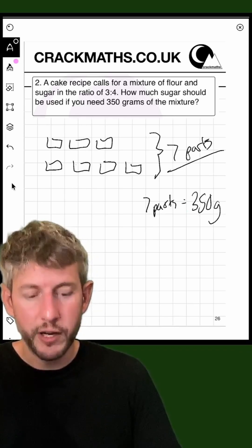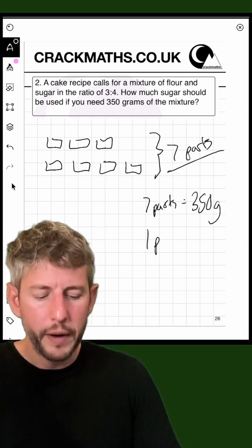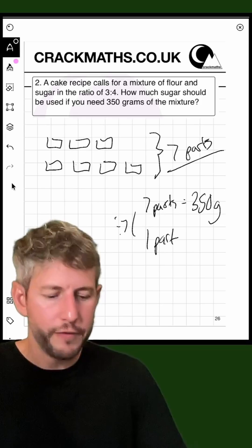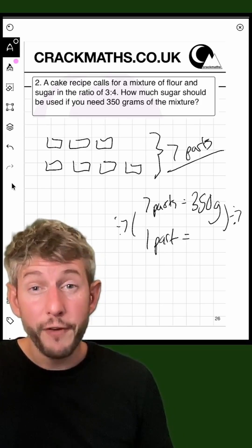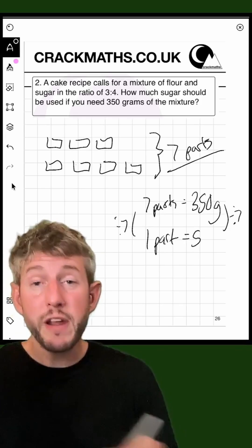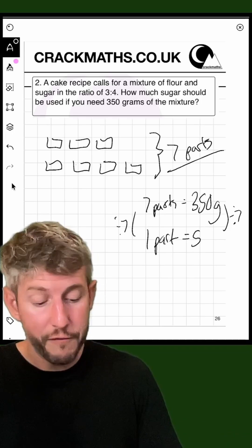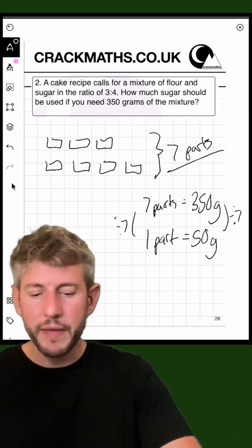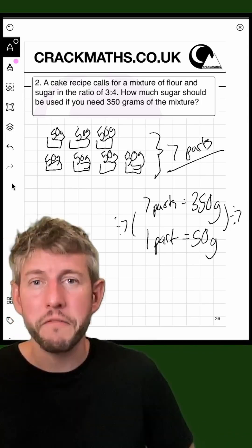If seven parts equal 350 grams, that means that one part is equal to this divided by seven. So 35 divided by seven is five. So 350 divided by seven is going to be 50 grams. So that means each one of these parts is 50 grams.